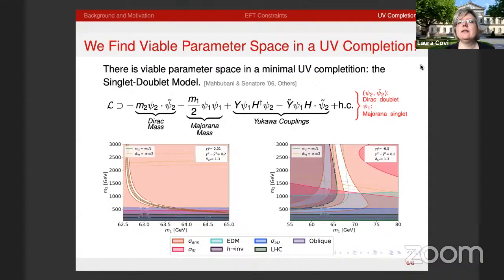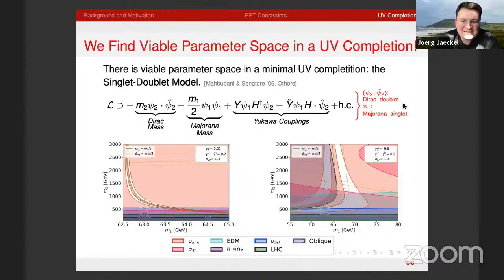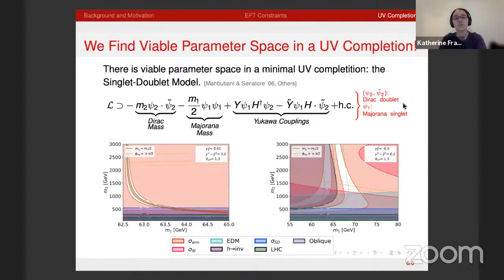Asked what the best signal channel is for this model, Katie replied that the two strongest constraints and best places to see a deviation are direct detection and the electron EDM, depending on whether the coupling is mostly real or mostly imaginary.